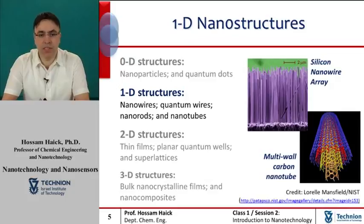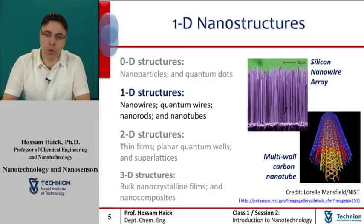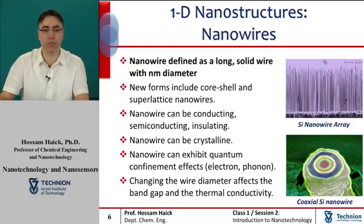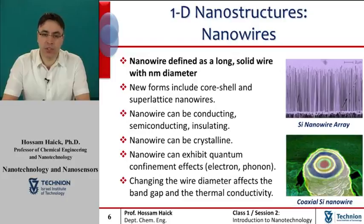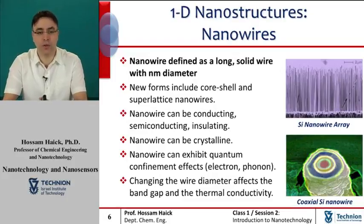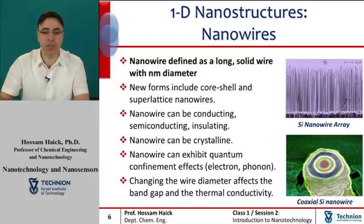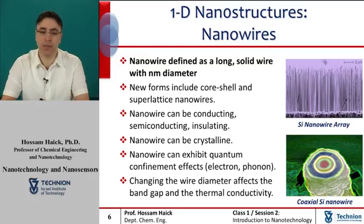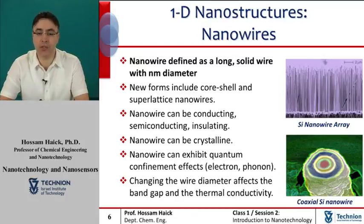From zero-dimensional nanoparticles, we will move to one-dimensional structures, which include, among others, nanowires, quantum wires, nanorods, and nanotubes. A nanowire is a nanostructure with a diameter of the order of a nanometer. Alternatively, nanowires can be defined as structures having a thickness or diameter constrained to tens of nanometers or less, and an unconstrained length.